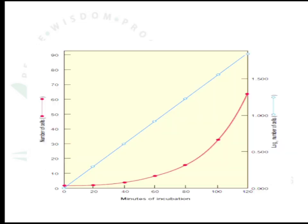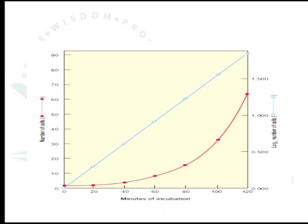The difference between the two graph types: plotting the number of cells versus minutes of incubation gives a curved graph, whereas plotting the log number of cells versus minutes of incubation gives a straight line.